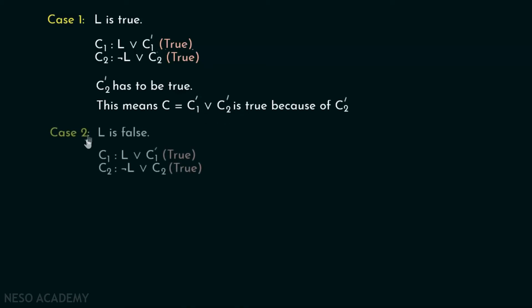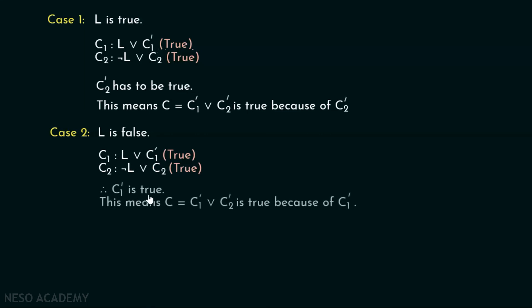Case 2: what happens when L is false? If L is false, then C̄1 has to be true, because this clause needs to be true. Therefore C̄1 is true, which means the resolvent C is true because of C̄1.